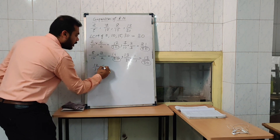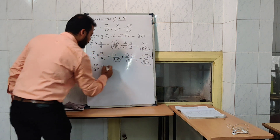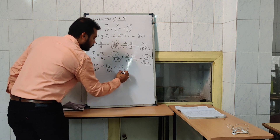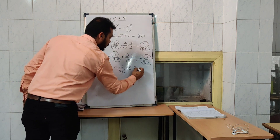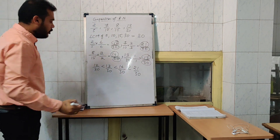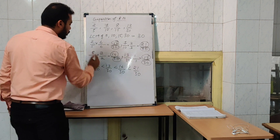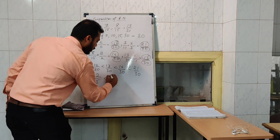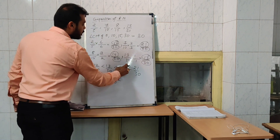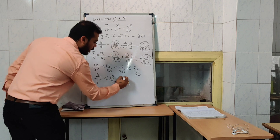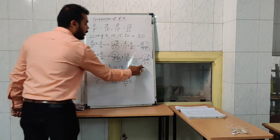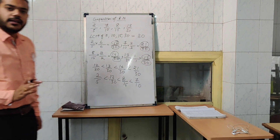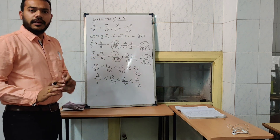So the lowest fractional number is 12 by 30. Then after 12 comes 13, after that 16, and 21 by 30. Now 12 by 30 comes from 2 by 5, 13 by 30 comes from 13 by 30, 16 by 30 comes from 8 by 15, and 21 by 30 comes from 7 by 10. This is one sample question where all the denominators are positive.